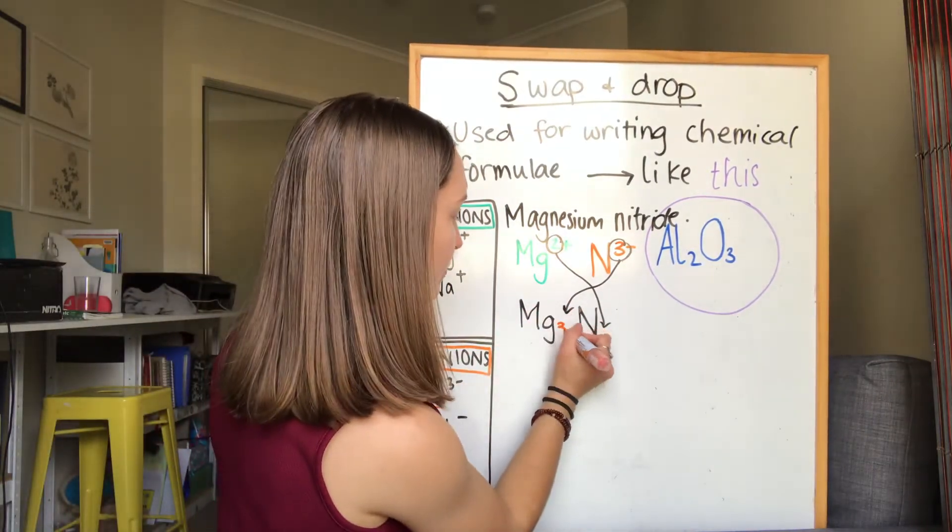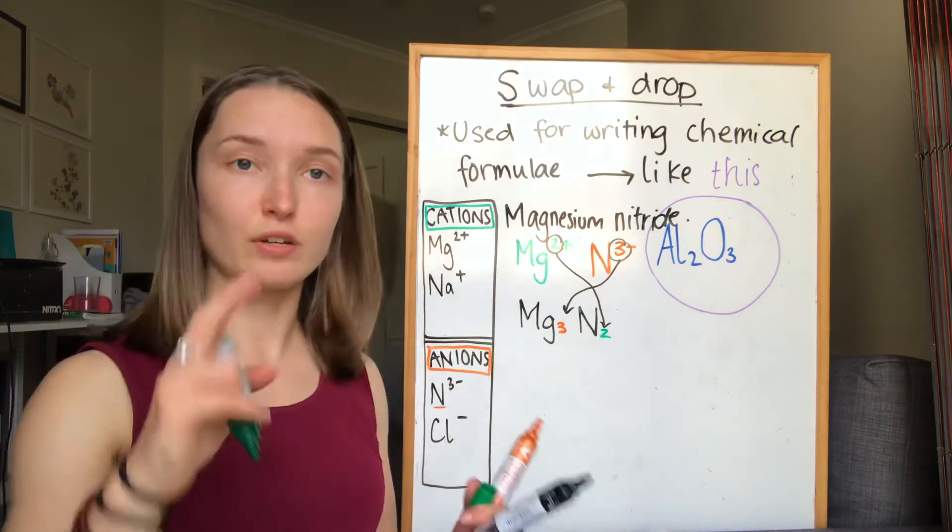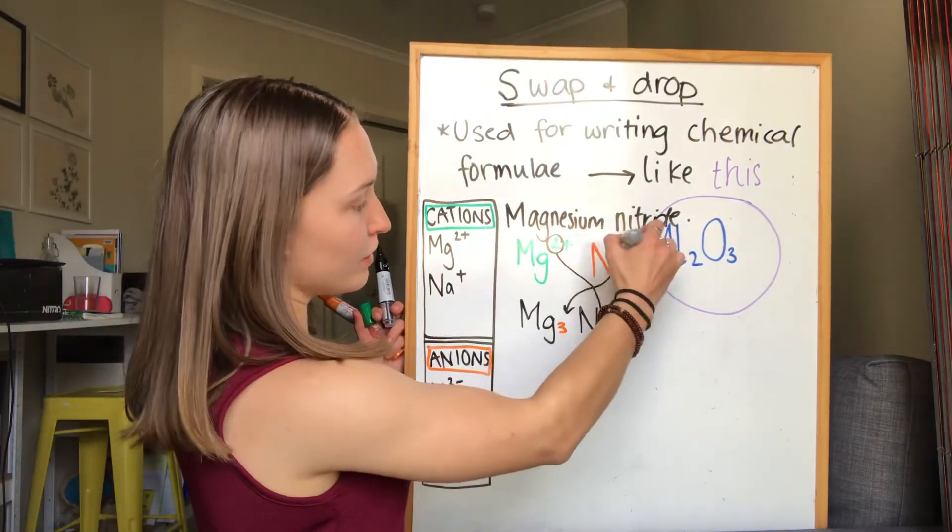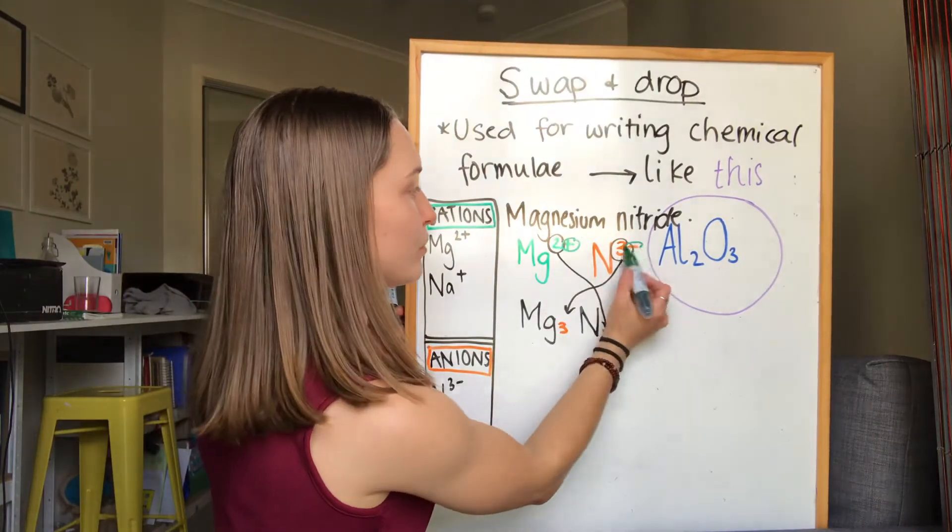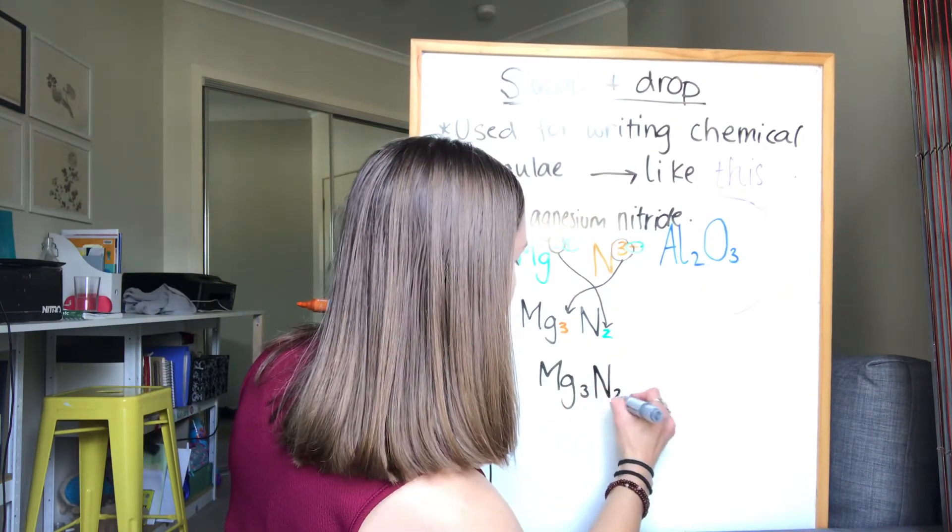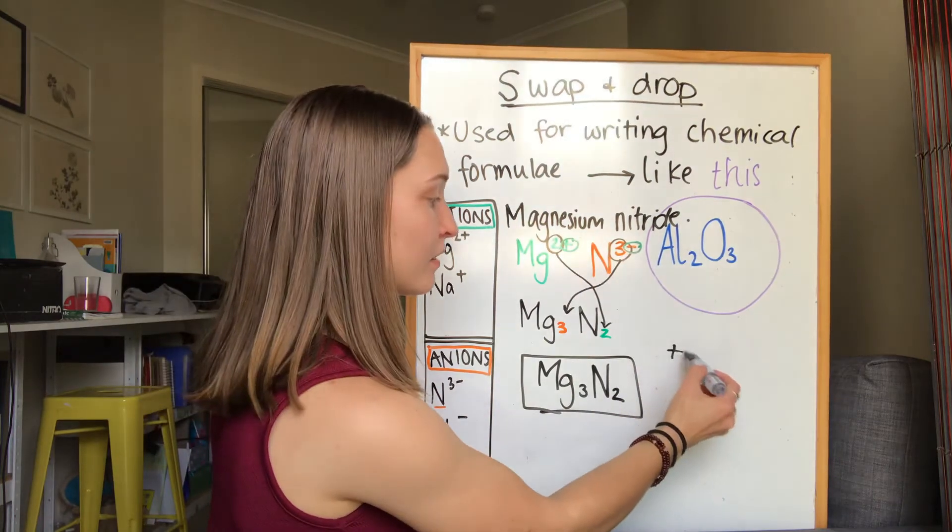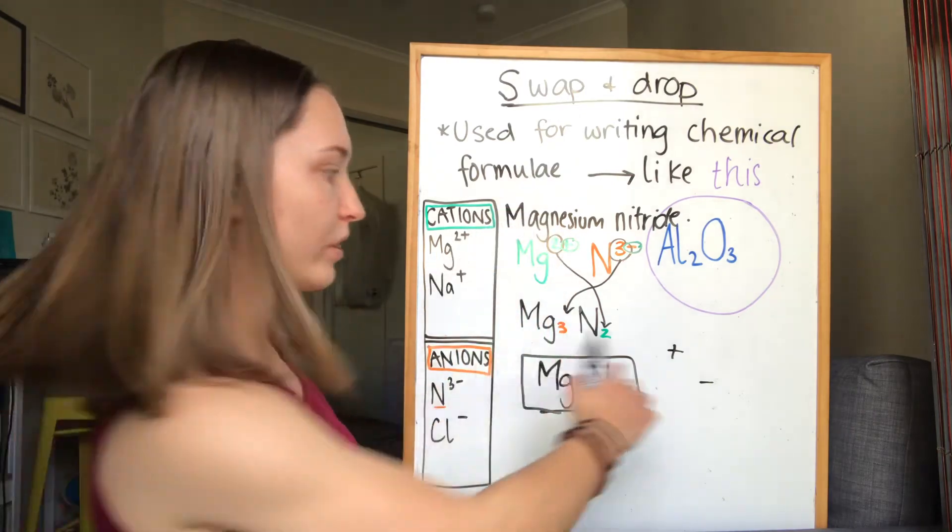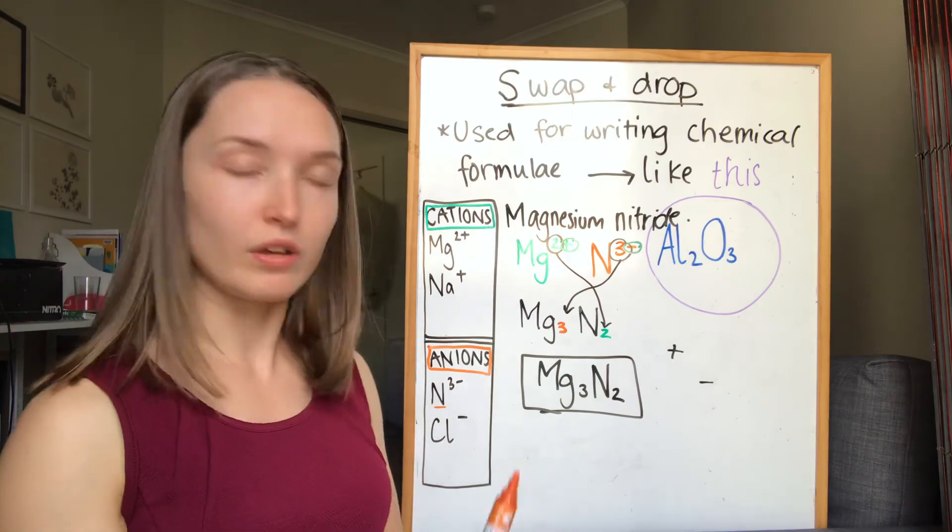The reason we say drop, swap and drop, there's actually two reasons. One is because we physically drop the number from above the letters to the bottom of the letters, and then we also drop or get rid of these charge symbols here. So the final answer should look like this: Mg₃N₂. If your final answer for a chemical formula has any pluses or minuses in it, that is always wrong. We never write a chemical formula with a charge attached to it. That's only for when we're writing ions by themselves. Hope that helps guys, let me know if you have any other questions.